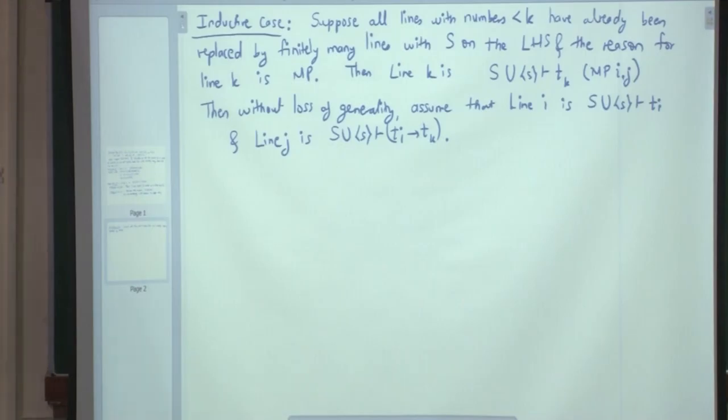So, by induction hypothesis, since I and J are less than K. So, one more thing, look at the first line that I have written. What did I say? Suppose all lines with numbers less than K.